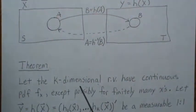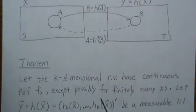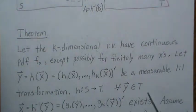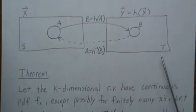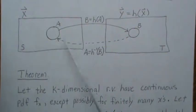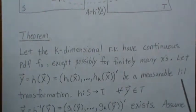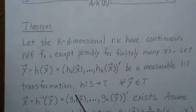Let's jump right into the theorem. If we have a k-dimensional random variable with a continuous PDF f of x, except possibly on finitely many points, let the transformation h of x equal y — which we can think of as k different components. We need the transformation to be measurable (I have a video series on probability measure for more detail) and also one-to-one, so the inverse image exists and uniquely maps elements back and forth.